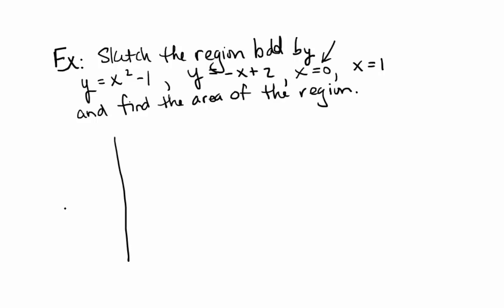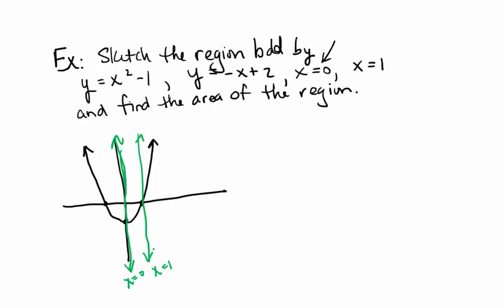x squared minus 1 is just going to be the parabola shifted down one unit. x equals 0 is the y-axis, and x equals 1 is here. Now y equals negative x plus 2 has a y-intercept of 2, a negative slope, and an x-intercept of 2 also. When they say the region bounded by all four of those graphs, they're just talking about the piece right in here that has one line on each side and one function on the top and one function on the bottom.